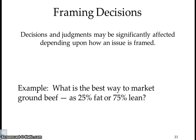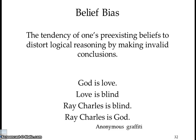Framing decisions: decisions and judgments may be significantly affected depending on how an issue is framed. For example, when marketing ground beef — is it 25% fat or 75% lean? Most people would buy the 75% lean, which is exactly why grocery stores label it that way.